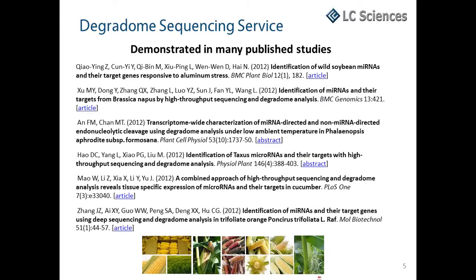This has been demonstrated in many published studies — in crop species such as soybean, rice, and maize; in fruits and vegetables such as orange and cucumber; ornamentals such as orchid; and other genera such as Brassica and Taxus.